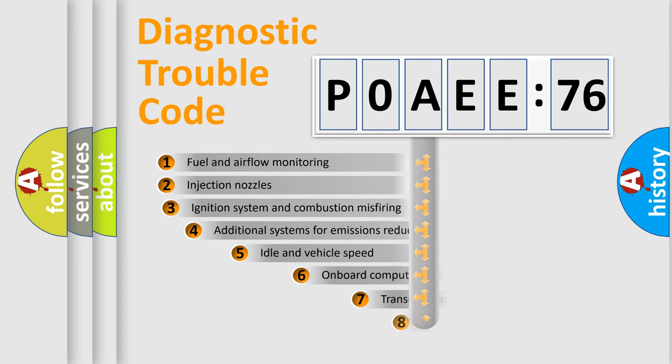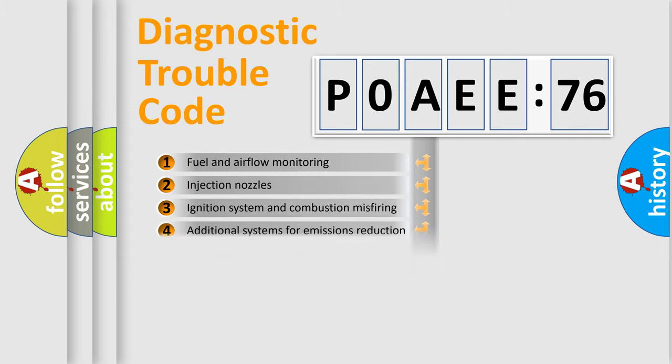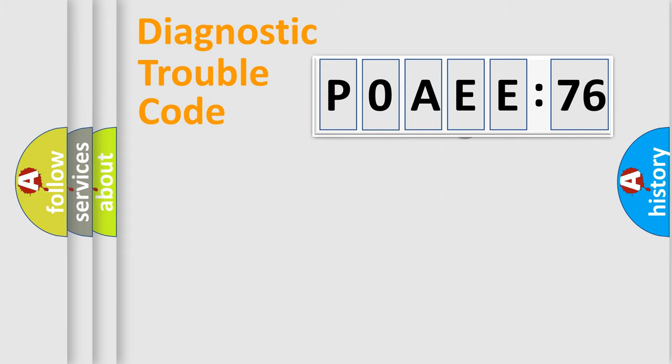The add-on to the error code serves to specify the status in more detail, for example, short to ground. Let's not forget that such a division is valid only if the second character code is expressed by the number zero.